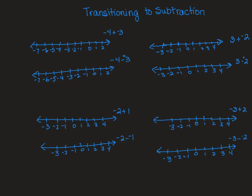Looking at the first problem, I have negative 4 plus negative 3. We talked about doing that — I would start at negative 4, and I'm adding 3 more negatives, and my answer is negative 7. And you should be pretty well mastered that.